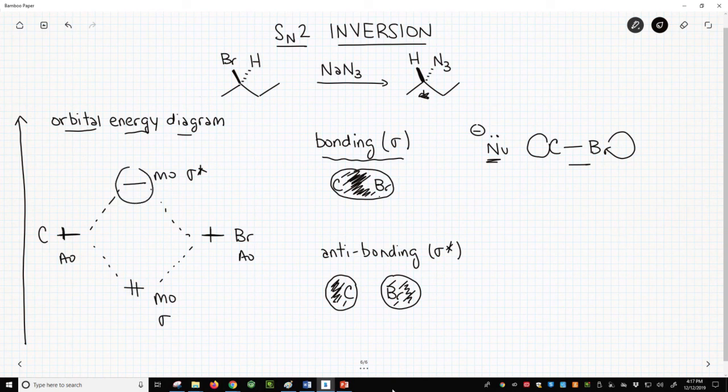That means the nucleophile needs to either approach from the bromine side or from the carbon side of this orbital, the sigma star orbital. The new bond is forming to carbon, so it will approach on the carbon side.